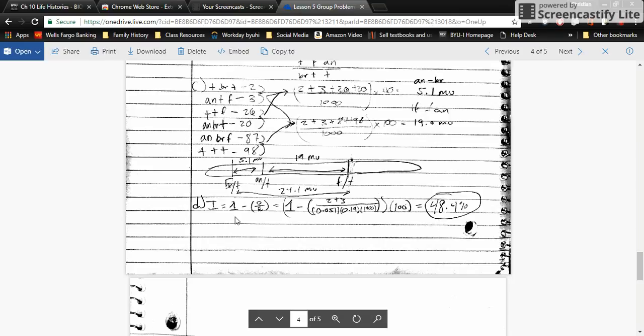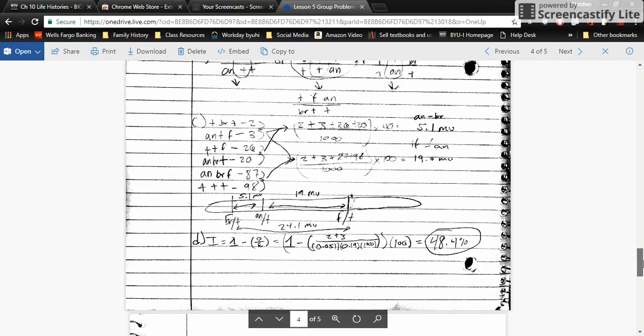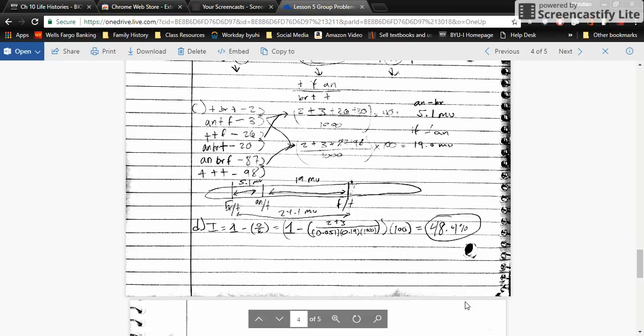To calculate the interference, the equation is I equals 1 minus observed over expected. You get the observed value by adding the double crossover values, which is 2 and 3—that gets 5. You multiply the map units, 0.19 times 0.051, times the total number of progeny, which is 1,000, times by 100 as well to get a percentage. We get 48.4% for our interference value.